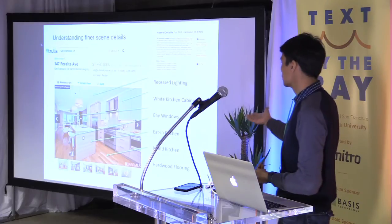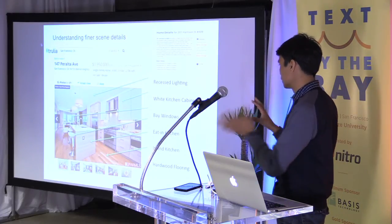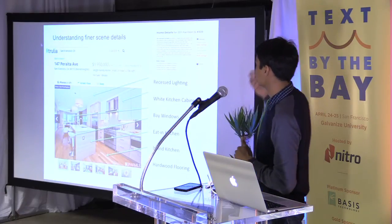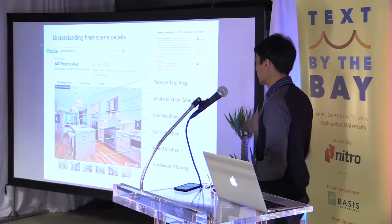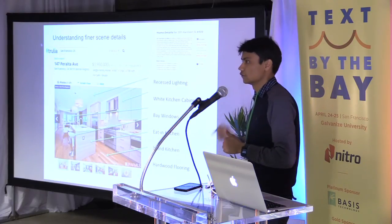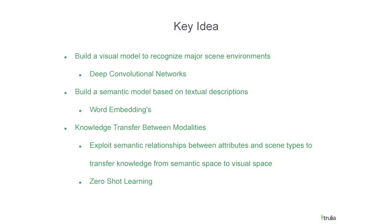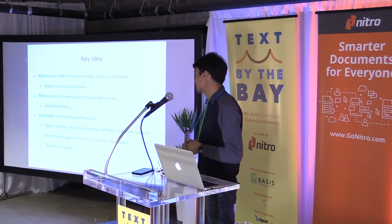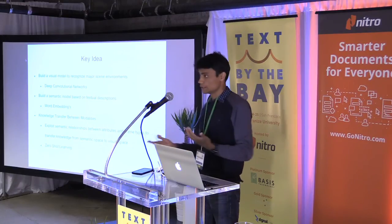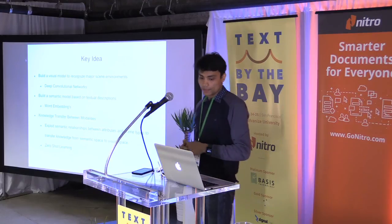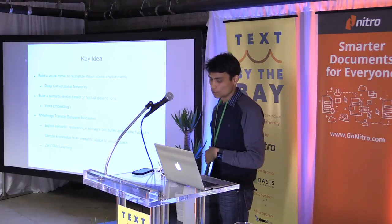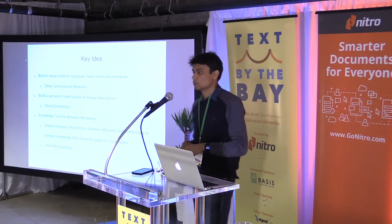As an example, you have a kitchen with so many attributes that are either occluded or difficult to perceive — bay windows, island kitchen, hardwood flooring, wide kitchen cabinets, recessed lighting — all mentioned in the description. Training an individual classifier for each one of them would be expensive. The key idea is: build a visual model to recognize major scene environments using deep convolutional networks or traditional bag-of-words models, then use text to build a semantic model of how things are organized in a house based on how people describe it, using word embeddings. Then do a knowledge transfer — transfer information from the contextual model over to the visual model. This falls into zero-shot learning where my visual model doesn't know anything about granite countertops or hardwood flooring, but I infer that information from my textual model.